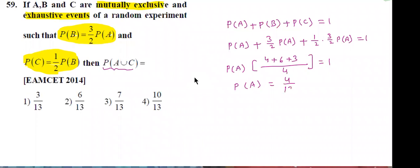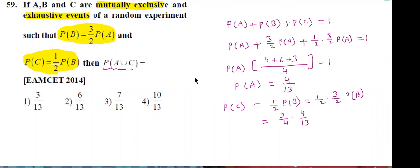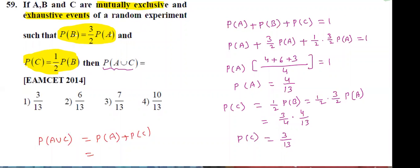P(C) = (1/2) × P(B), and P(B) = (3/2) × P(A) = (3/2) × (4/13), so P(C) = (1/2) × (3/2) × (4/13) = 3/13. Therefore P(A∪C) = P(A) + P(C) = 4/13 + 3/13 = 7/13. Third option is correct.